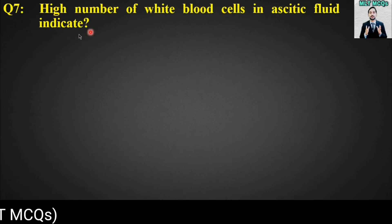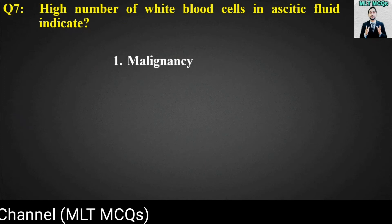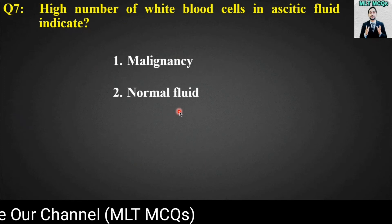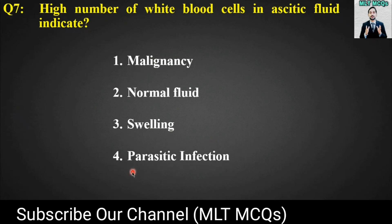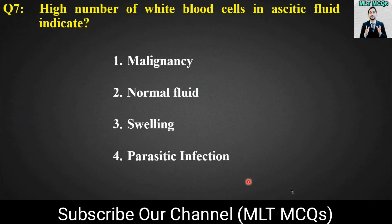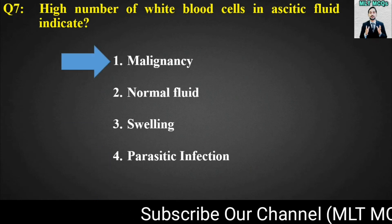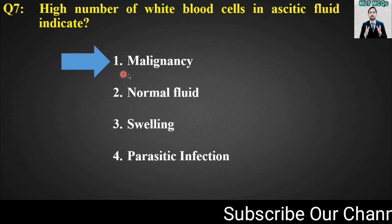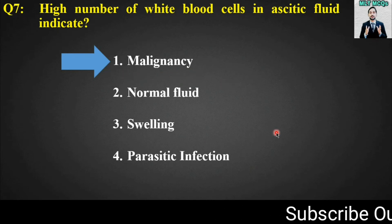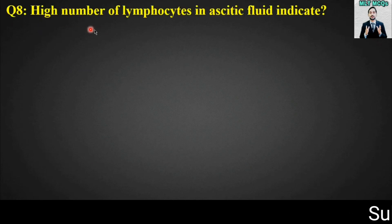malignancy, normal fluid, swelling, or parasitic infection. The right answer for this MCQ is option number one: high number of white blood cells in ascitic fluid indicate malignancy. MCQ number eight is: high number of lymphocytes in ascitic fluid indicate — options are: